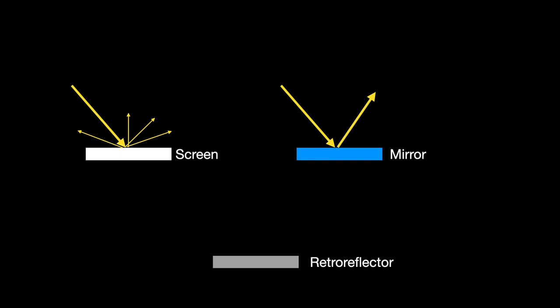Here is a retro-reflector and I'm going to show you how they work. But when light comes down in a particular direction, it bounces back in the same direction. That's what makes it a retro-reflector.